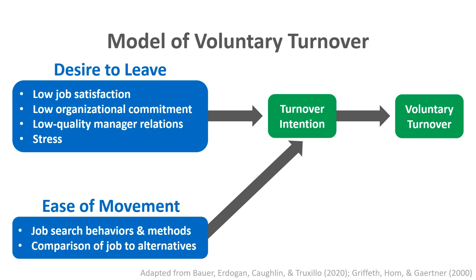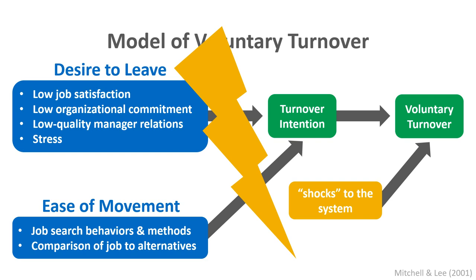This model implies a progression of withdrawal over time — building desires to leave, perception of greater ease of movement, leading to turnover intentions and ultimately voluntary turnover. However, in some cases people leave all of a sudden due to what are called shocks to the system, consistent with the unfolding model of voluntary turnover synthesized by Mitchell and Lee in 2001. For example, an angry outburst or a big conflict with a co-worker might cause someone to hand in their notice immediately, making it difficult for the organization to foresee.